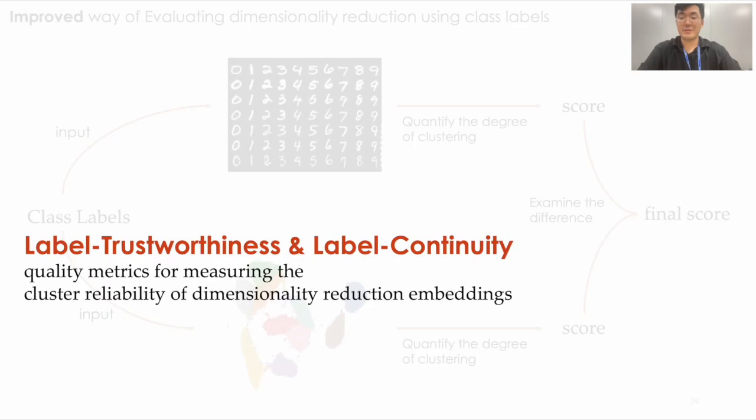We've termed our metrics as label trustworthiness and continuity following the famous metrics, trustworthiness and continuity. We propose a pair of metrics recognizing two types of distortions, missing and false groups.